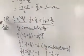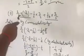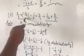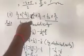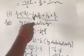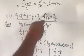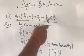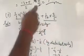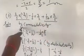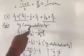Now the second part is: 2 upon 5 into minus 3 upon 7 minus 1 upon 6 into 3 upon 2 plus 1 upon 14 into 2 upon 5. Why commutativity?